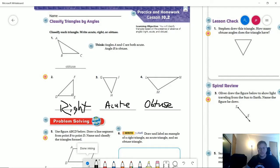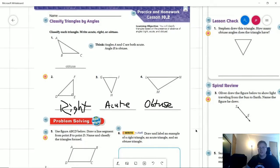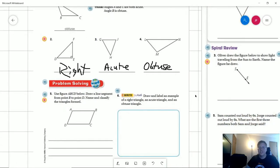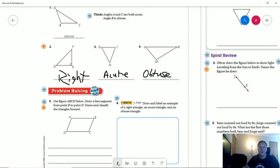Number six: draw and label an example of a right triangle, an acute triangle, and an obtuse triangle. If you looked at number two, number three, and number four, you already have examples of that. So you could basically just try to recreate those. So I'm not going to try to do that.